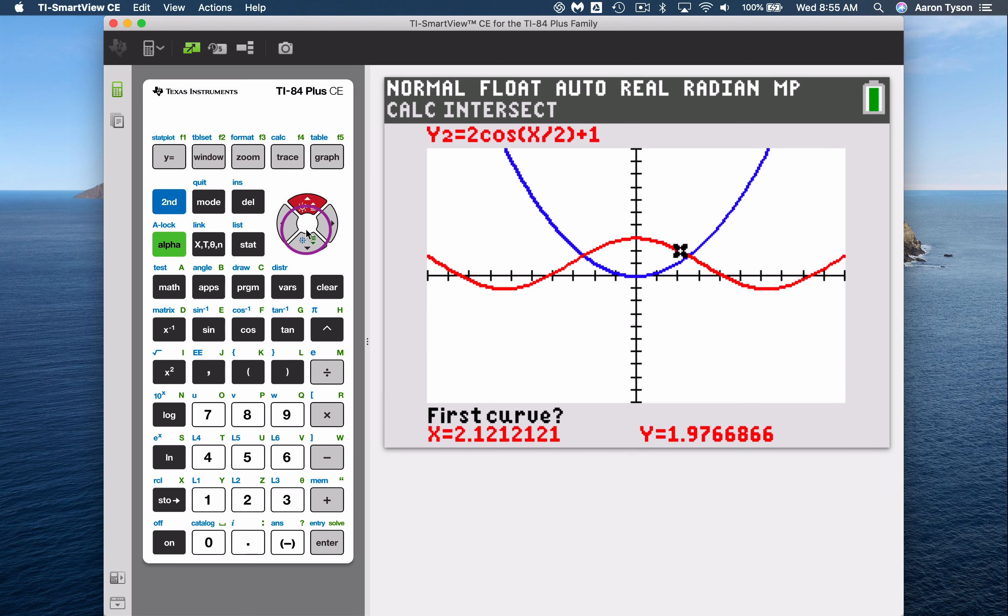Now when it's saying first curve, essentially that's just you're selecting the first of the curves that you're trying to find a point of intersection for. You just pick any point on your curve. For the second curve, again, you're just picking any point on your curve.